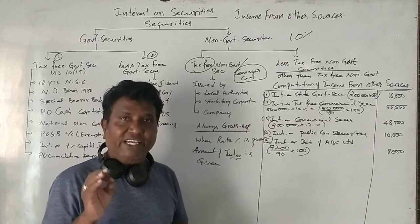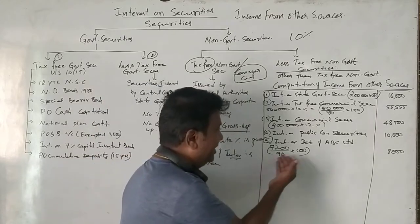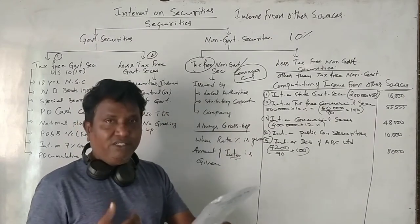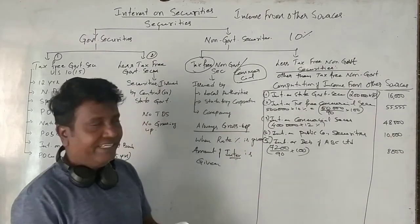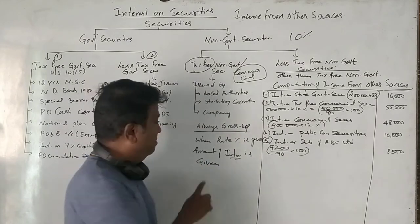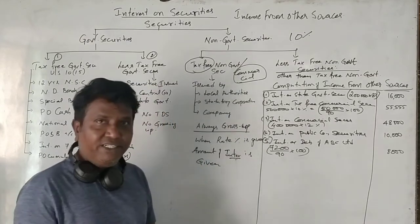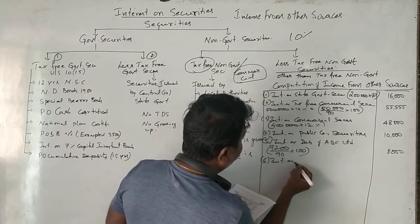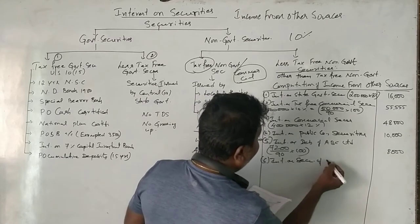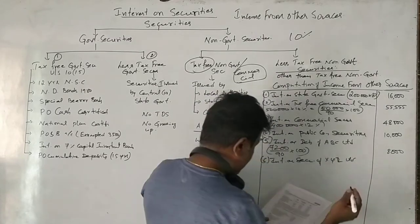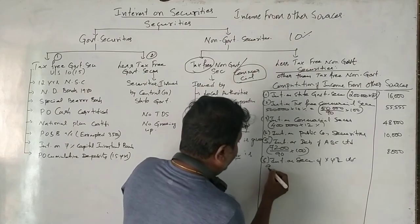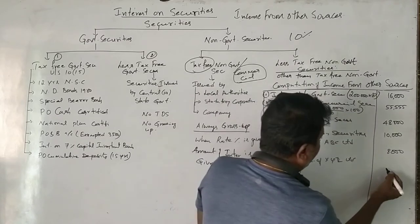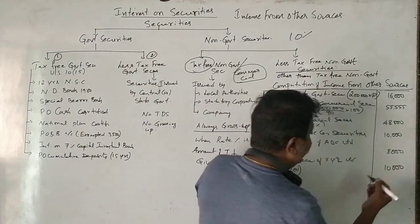Next: 9,000 rupees interest received on securities of XYZ Limited. Similar to ABC Limited — it is non-government and only the amount of interest is given, no rate. So we gross up. Interest on securities of XYZ Limited: 9,000 ÷ 90 × 100 = 10,000 rupees.